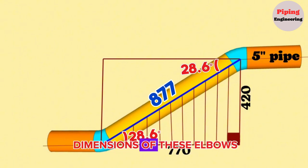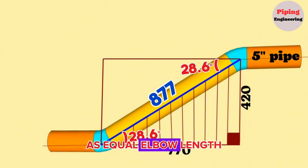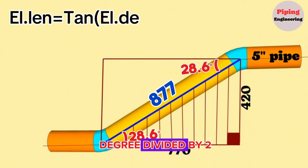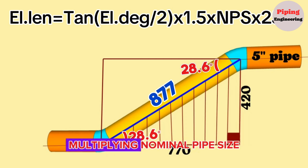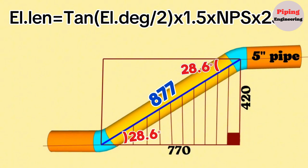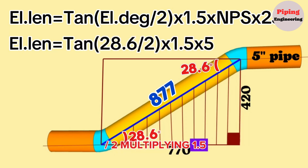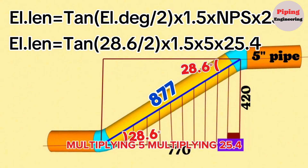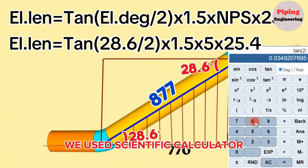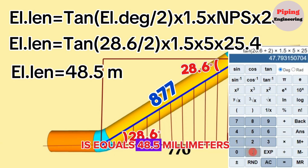Now let's calculate the dimensions of these elbows from center to end. The formula for calculating the center-to-end distance of cut elbows is: Elbow length equals tangent of (elbow degree divided by 2), multiplied by 1.5, multiplied by the nominal pipe size (NPS), multiplied by 25.4. For a 5-inch 28.6-degree butt weld elbow: length equals tangent(28.6/2) × 1.5 × 5 × 25.4. Using a scientific calculator, the result is 48.5 mm.